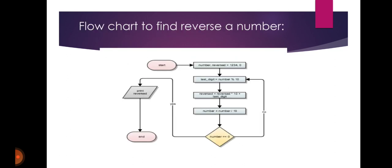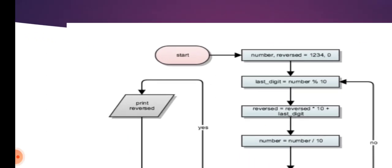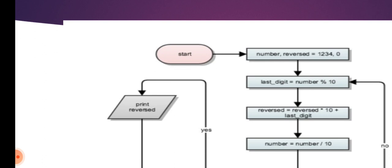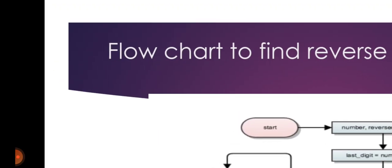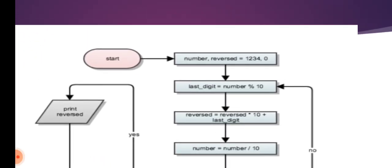Flowchart to find the reverse of a number. To write the flowchart, the main starting point is an oval shape for Start, and it ends with an oval shape as well. Next, initialize: number = 1234, reverse = 0.